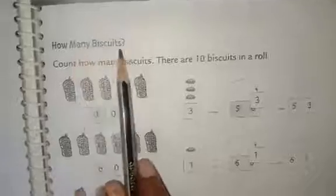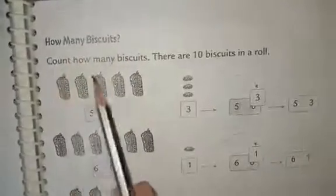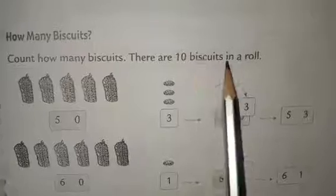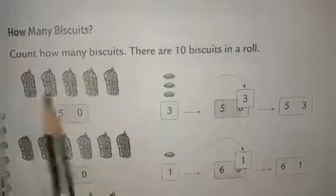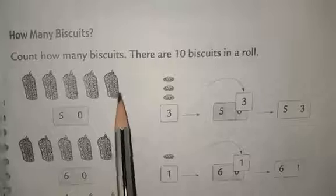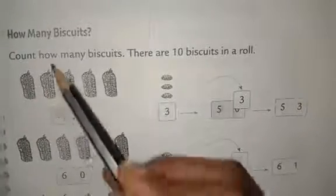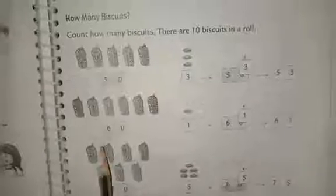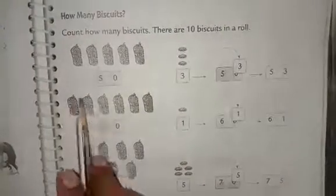How many biscuits? Count how many biscuits. There are 10 biscuits in a roll. Here we have some biscuits, and each roll has 10 biscuits.